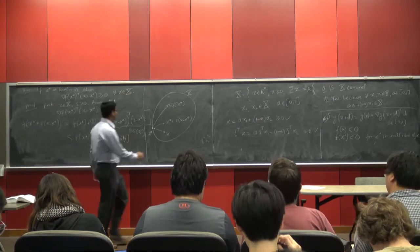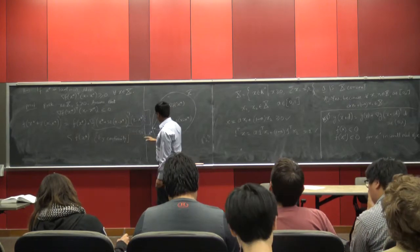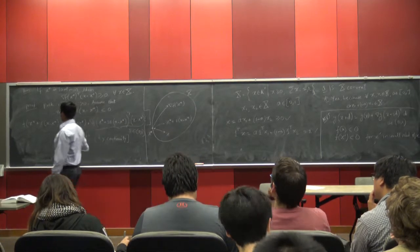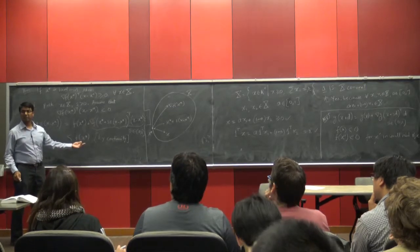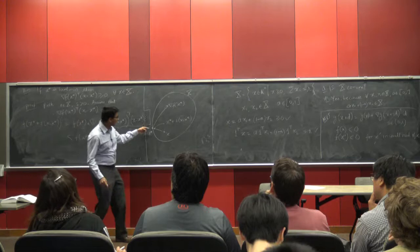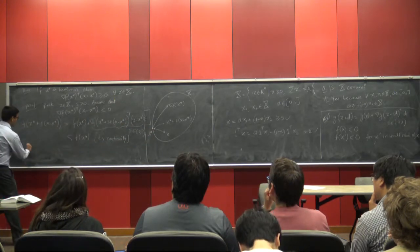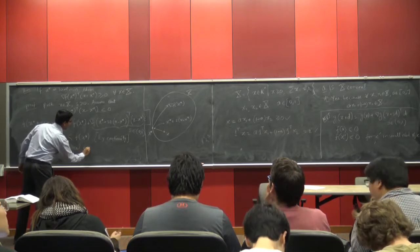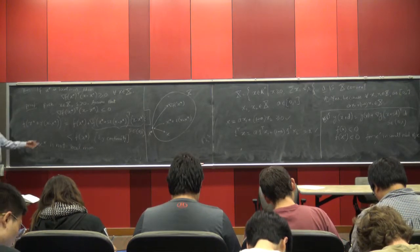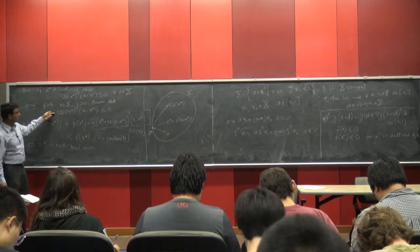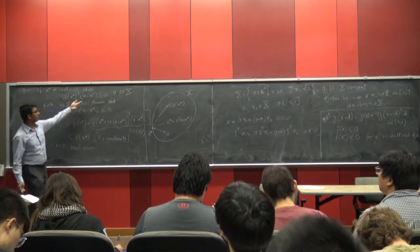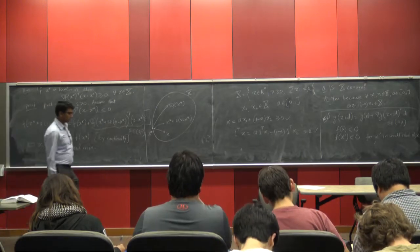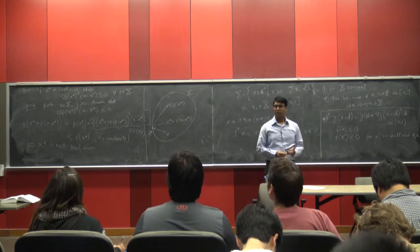What we have shown is: if this condition holds, I can move in this direction and reduce my cost, which implies X* is not a local minimum. Therefore our hypothesis that the inner product is strictly less than 0 is wrong, and so the gradient of F at X* must have a non-negative inner product with (X − X*) for all X in X.